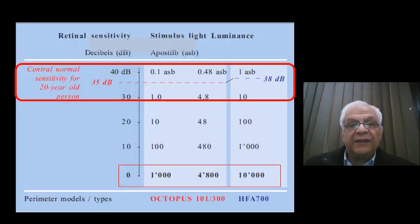As you notice here in this graph, the zero decibel is different between the machines. Here this is the zero, and you notice with the Octopus 101 the zero level is different from that of the Humphrey. So keep in mind, zero decibel does not mean zero light, but it is something that can be started with in different machines with different values.